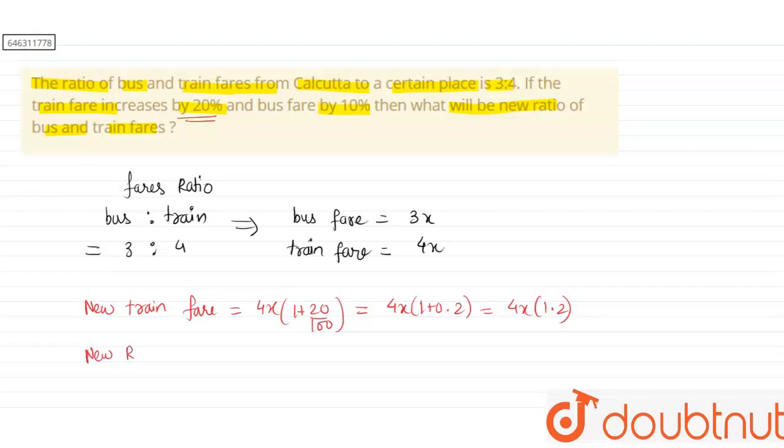new bus fare equals 3x times 1 plus 10 by 100. This becomes 3x times 1.1.